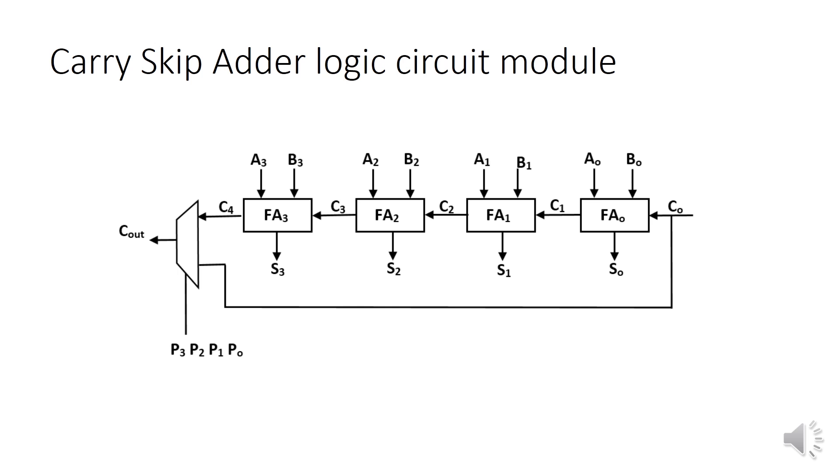This is a typical module of a carry skip adder circuit. This module is made with four full adders in series 1, 2, 3, 4, with a multiplexer at the end and a bypass line that skips the carry under certain conditions.